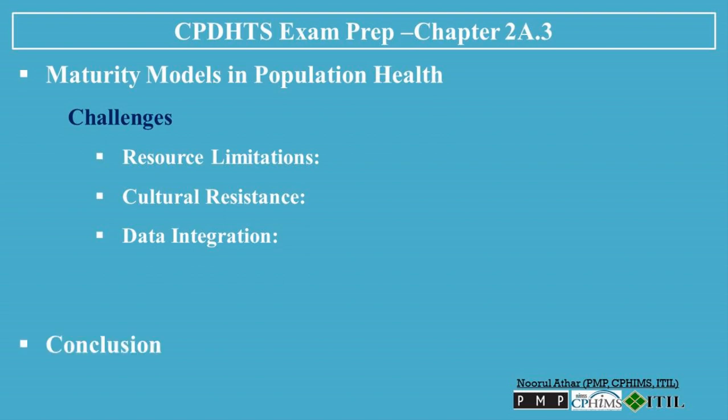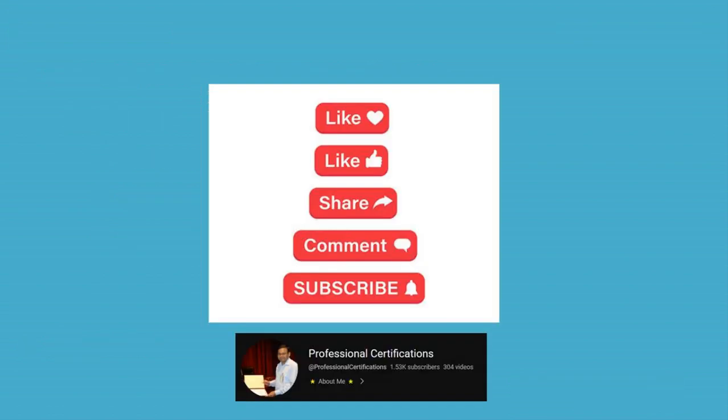Maturity models in population health are essential tools for healthcare organizations aiming to systematically improve their population health management capabilities. By following these models, organizations can ensure that their efforts are both effective and sustainable, leading to better health outcomes for the populations they serve. If you found this video informative, please like, share, and subscribe.